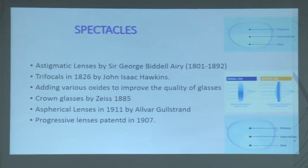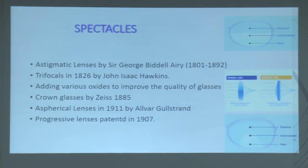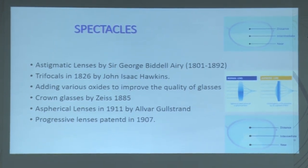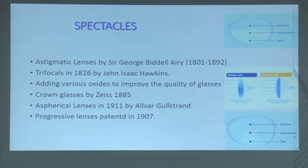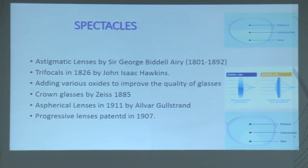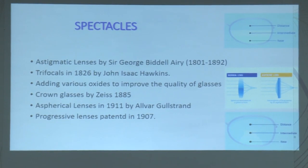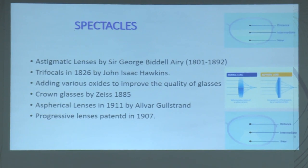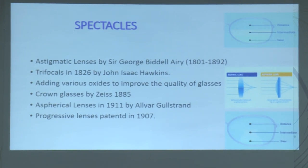Astigmatic lenses were developed by Sir George Beedle Airy. Trifocals were invented in 1826 by John Isaac Hawkins. Adding various oxides to improve the quality of glasses was also done. Crown glasses were discovered by Zeiss in 1885. Aspheric lenses were developed in 1911 by Alvar Gullstrand. Progressive lenses were patented in 1907. You can see the difference between trifocal and progressive lenses. Aspheric lenses address chromatic aberrations, which cause a point to not be focused correctly.